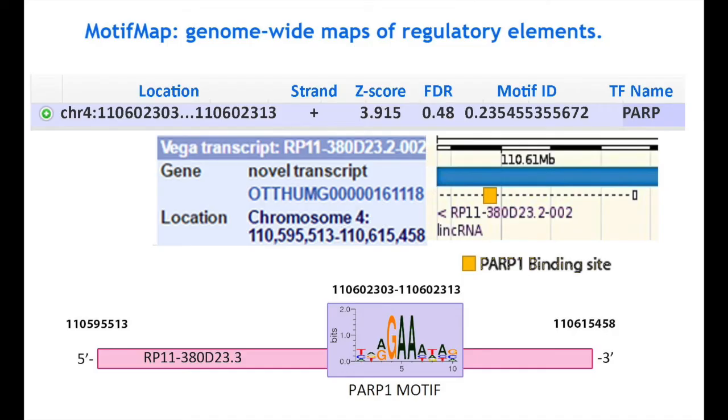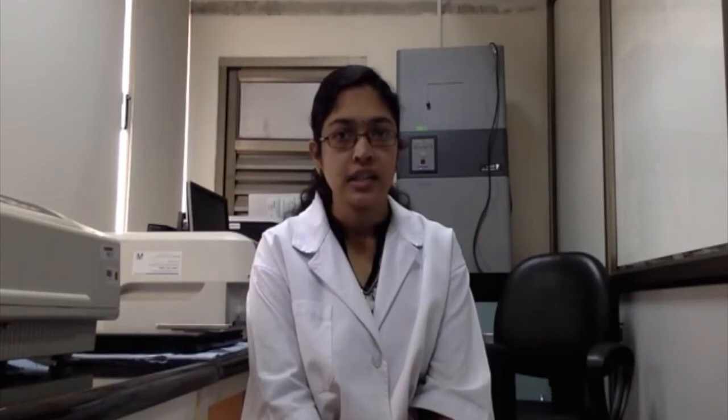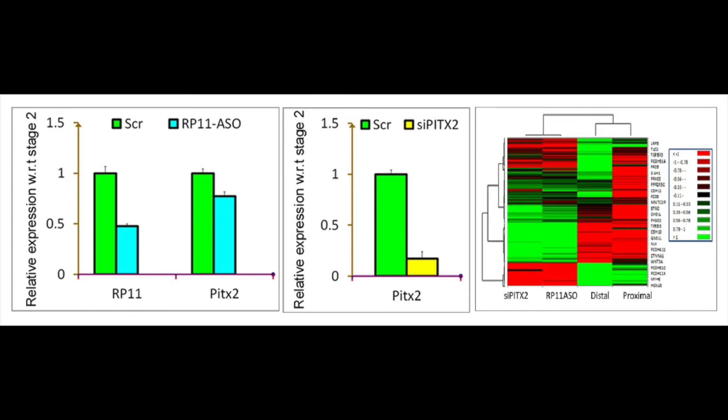Interestingly, RP11 also includes a binding site for PARC1. Chromatin immunoprecipitation assays revealed that PARC1 is a repressor for PITX2 and also indicated enhanced association of PITX2 with nuclear beta-catenin in the distal lung precursors. PARC1 silencing resulted in a drastic increase in distal markers, thus allowing us to explore whether PITX2 is involved in the enrichment of distal lung precursors. Following that, whole genome microarray analysis of RP11 and PITX2 knockdown was carried out in bi-potential lung progenitors.